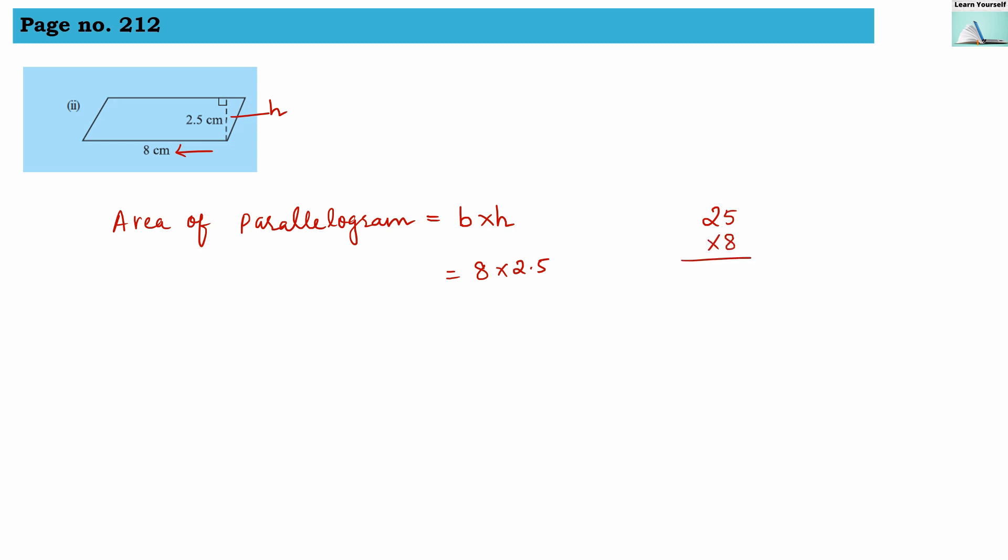5 into 8 is 40, 0, 4. 16 plus 4 is 20. So 200 will be the answer. Now after decimal point one number is there. So from one's position we are counting one number and we are putting decimal point here. So area is going to be 20 centimeter square.